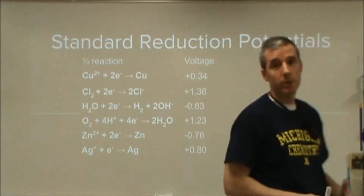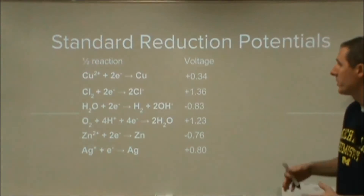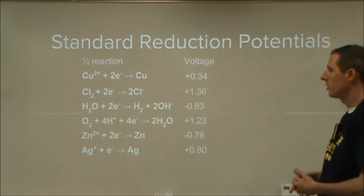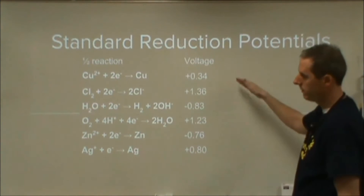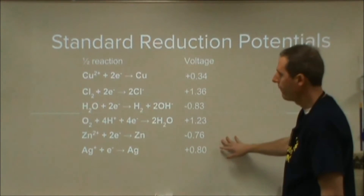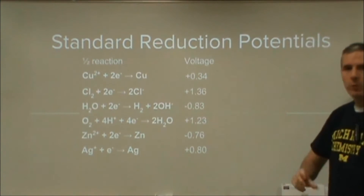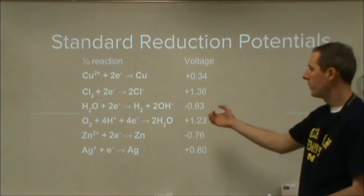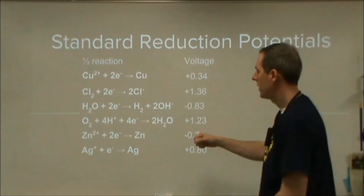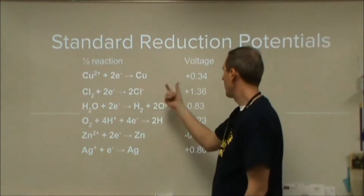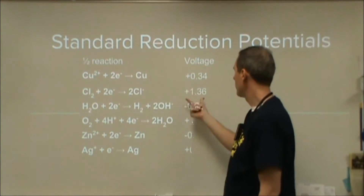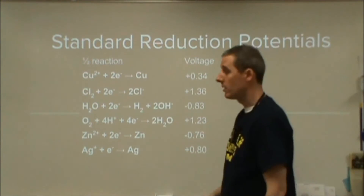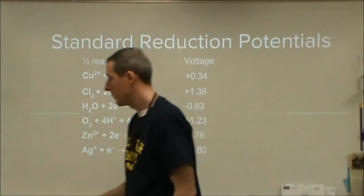So this is a redox problem, so we're starting with standard reduction potential. We have six different half-reactions listed here. Some of these are probably going to end up changing from the reduction to the oxidation. When we do that, we'll change the sign of the voltage. We're going to use these to do our analysis.